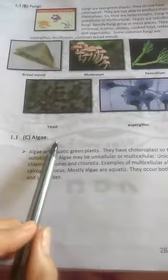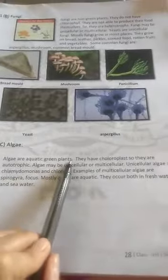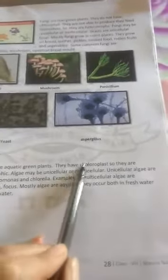The third classification is algae. Algae are aquatic green plants. They have chloroplasts, so they are autotrophic. Algae may be unicellular or multicellular.